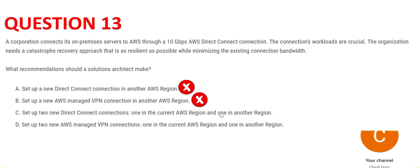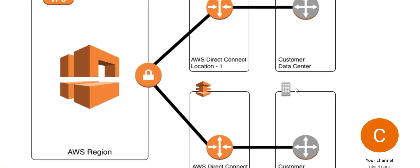Option C suggests creating two Direct Connect connections — one in the current AWS region and another in a different region. This gives maximum resiliency. Option A gives one step of resiliency; Option C gives two steps, which is why C looks correct. Option D uses the same setup but with a VPN connection, which causes bandwidth issues, so we will not use VPN. C is correct. The diagram shows multiple regions with multiple Direct Connect links for maximum resiliency.